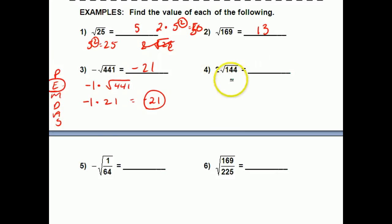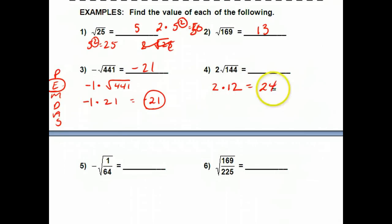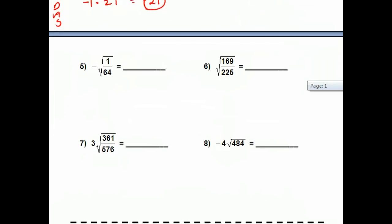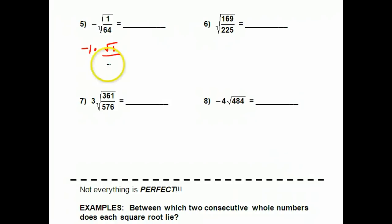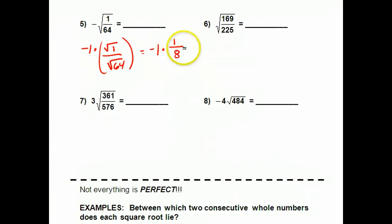Let's try this one. The square root of 144 gives me 12, so 2 times 12 gives me 24. Now when you have a square root over a fraction, I can rewrite it as the square root of the numerator over the square root of the denominator. So I've got negative 1 times the square root of 1 over the square root of 64. The square root of 1 is 1, and 8 times 8 is 64, so the square root of 64 is 8. Negative 1 times 1 over 8 gives me negative 1 over 8.